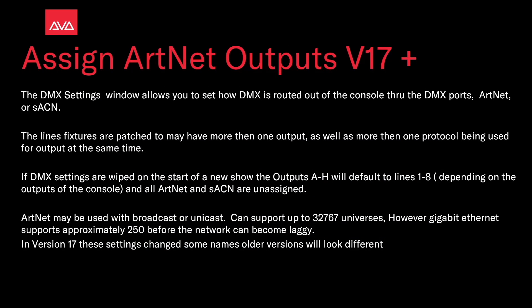The new existing window allows you to understand how DMX is routed out of the console, either through the DMX ports, ARTNET, or streaming ACN. The lines fixtures are patched to may have more than one output, as well as more than one protocol being used for the output at the same time. If DMX settings are wiped at the start of a new show, outputs A through H will default to lines 1 through 8, depending on the outputs of the console, and all ARTNET and streaming ACN are unassigned.